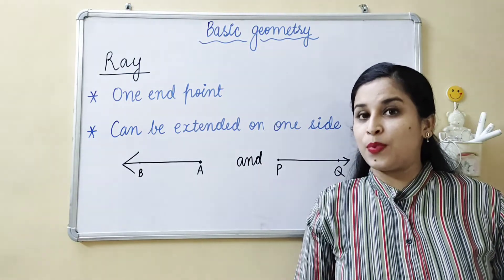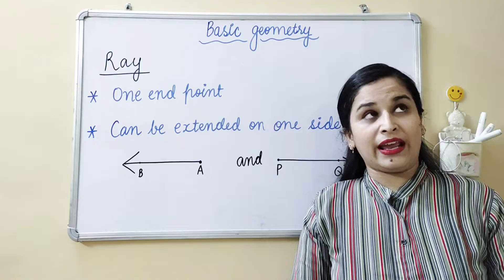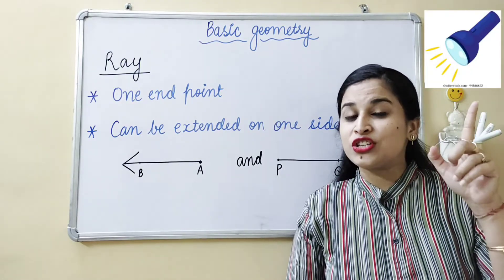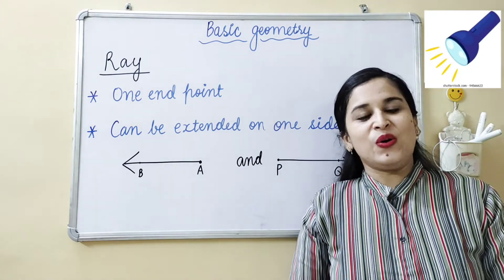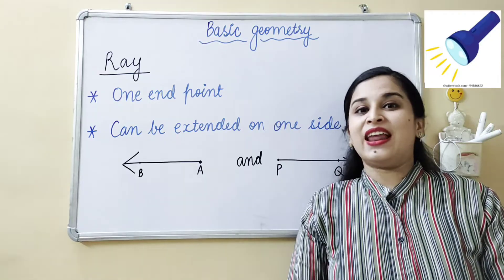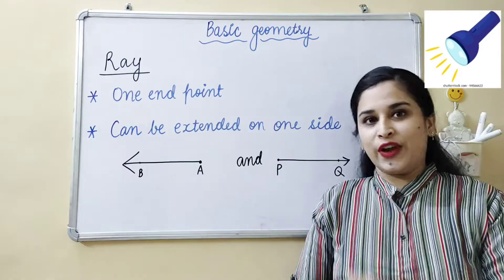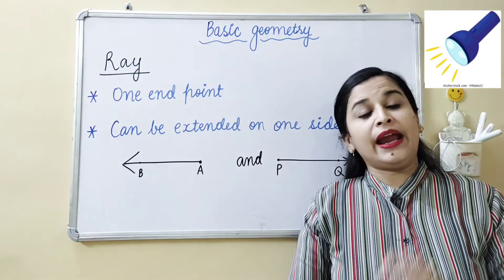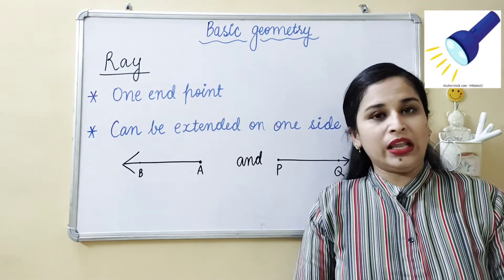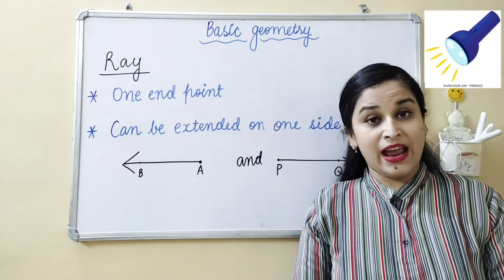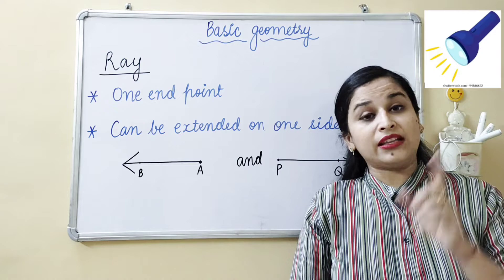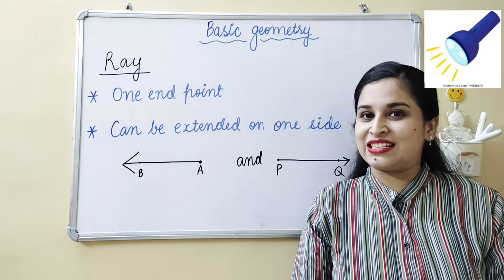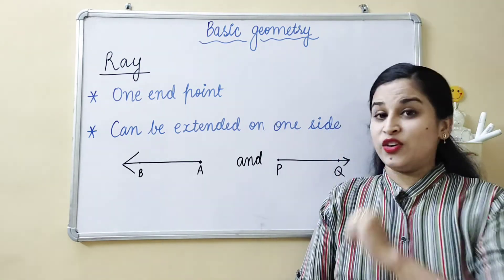The second real life example of a ray is torch light. When a torch is turned on, it gives light to the room or anywhere else, and the rays coming out from the torch are also an example of a ray.